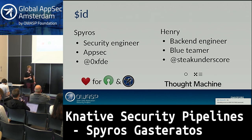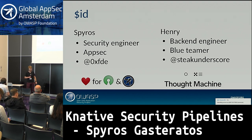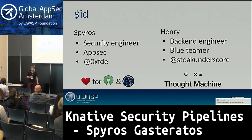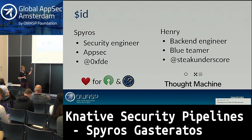Hi guys, I'm Henry. I also work with Spiros on the same team at Thought Machine. While he's breaking stuff, I'm trying to stop him normally — it's like a challenge. I'm a backend engineer writing code and trying to write tools for security. This is one of the things we've been working on. You can also find me on GitHub or Twitter as 'stake underscore'.